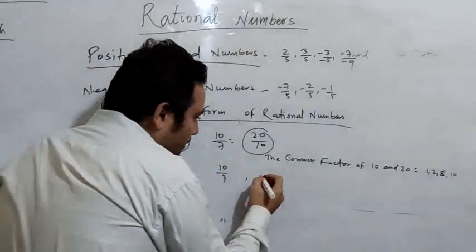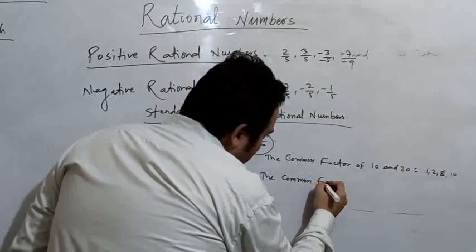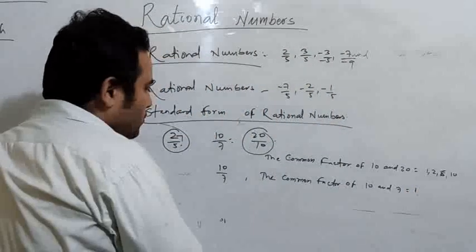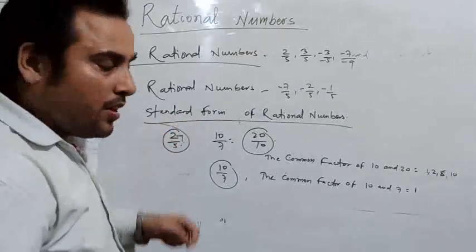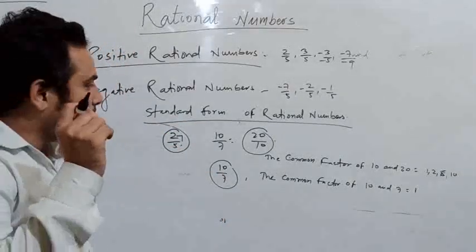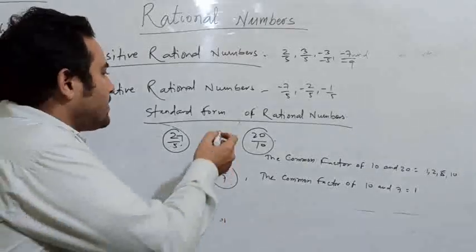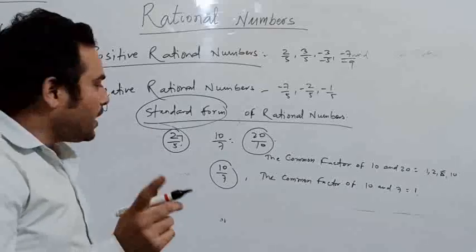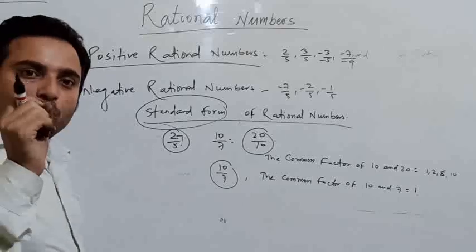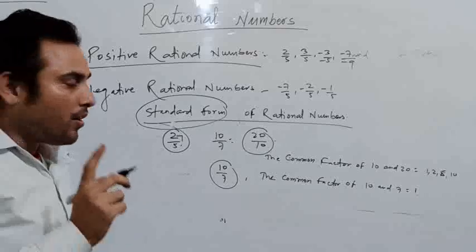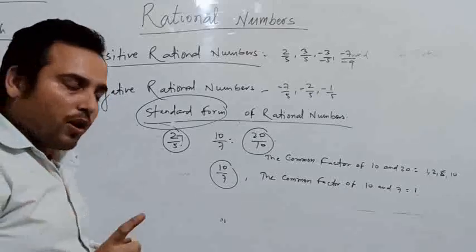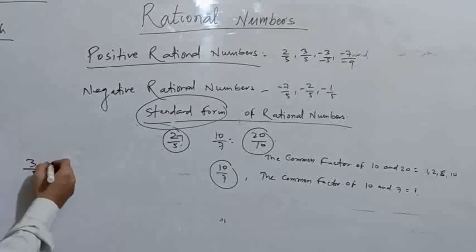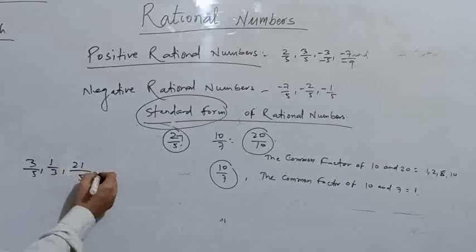However, 10 by 7 is in standard form because the common factor of 10 and 7 is only 1. Another way to check: if the HCF of the numerator and denominator is only 1, then it is in standard form. If the HCF is other than 1, then it is not in standard form. Examples of standard form: 3 by 5, 1 by 3, 21 by 5.